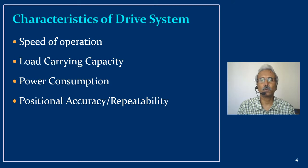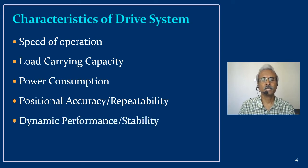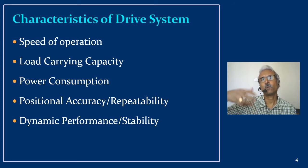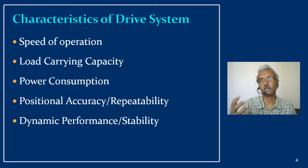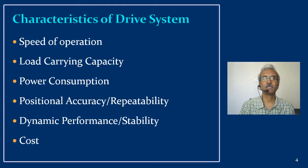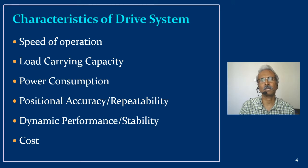Positional accuracy and repeatability are very crucial, especially in assembly operations. Next is dynamic performance and stability — if a robot carries a heavy payload and wants faster cycle times, will it still be stable? A robot carrying a heavy load at faster cycles must have very high dynamic stability. Finally, cost — in a developed country cost is typically the last parameter considered, whereas in a developing or underdeveloped country cost often becomes the first parameter.